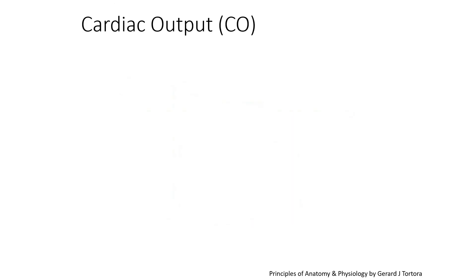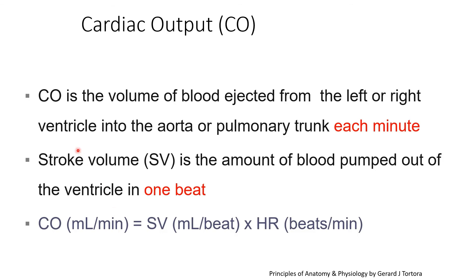Next is cardiac output. Cardiac output is the volume of blood ejected from the left or right ventricle into the aorta or pulmonary trunk each minute. Stroke volume is the amount of blood pumped out of the ventricle in one beat. Cardiac output equals stroke volume multiplied by heart rate. This concludes the introductory part of hemodynamics and electrophysiology of the heart. Thank you.